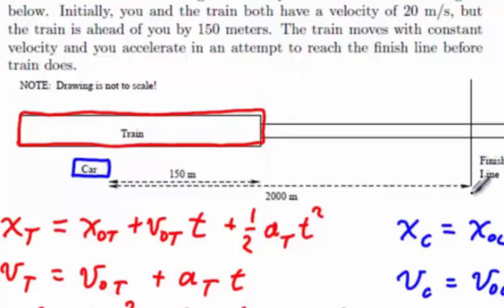Finally, and a little bit more bizarrely, would be to define the x equals 0 location at the finish line, meaning that the car has an x0 of minus 2000 and the train has an x0 of minus 1850.